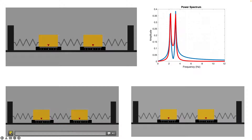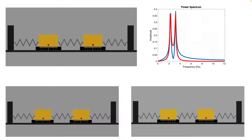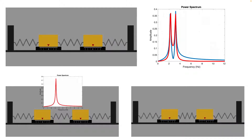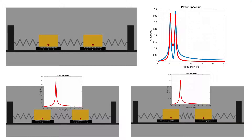But once I set the initial displacement to the first mode ratio — in this case negative 1 — the cards will start oscillating at only one frequency, which will be 3.2 Hz. Similarly, if I set it to the second mode ratio, which was 1 because I designed a symmetrical system, then you will only see one peak in the power spectrum, although the system is 2 degrees of freedom and you would expect two peaks.